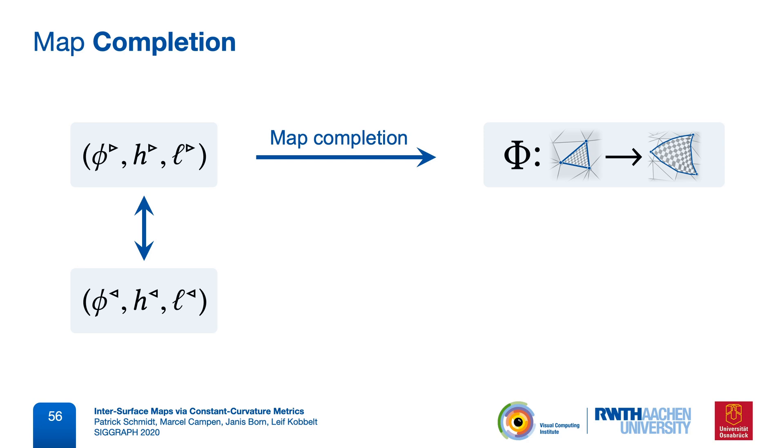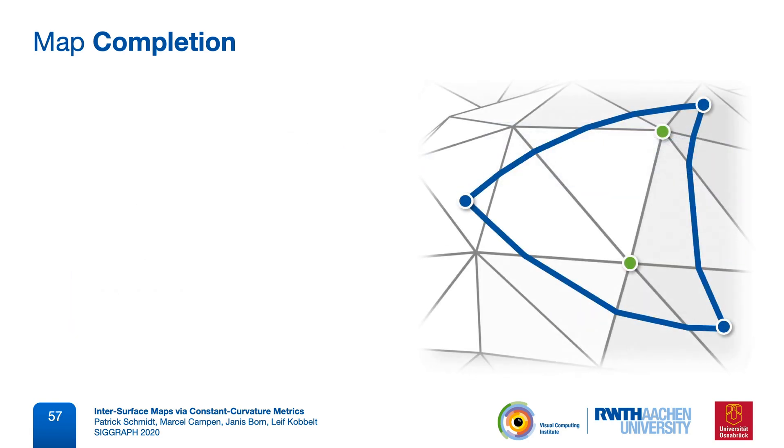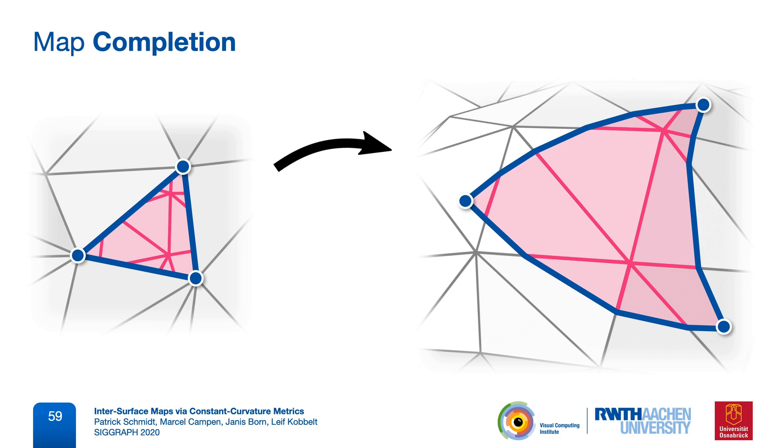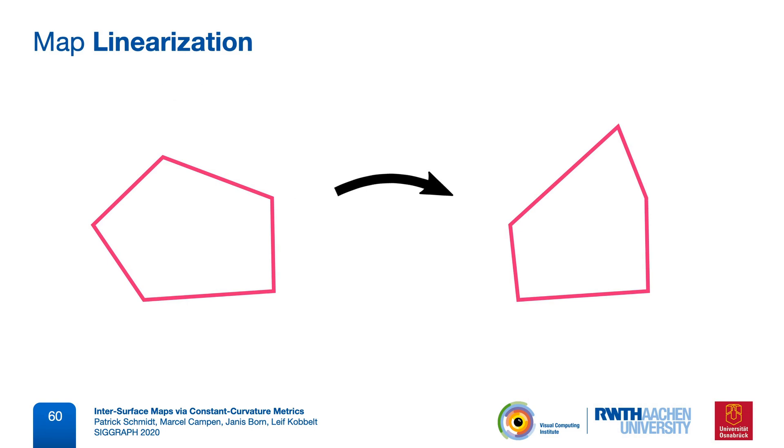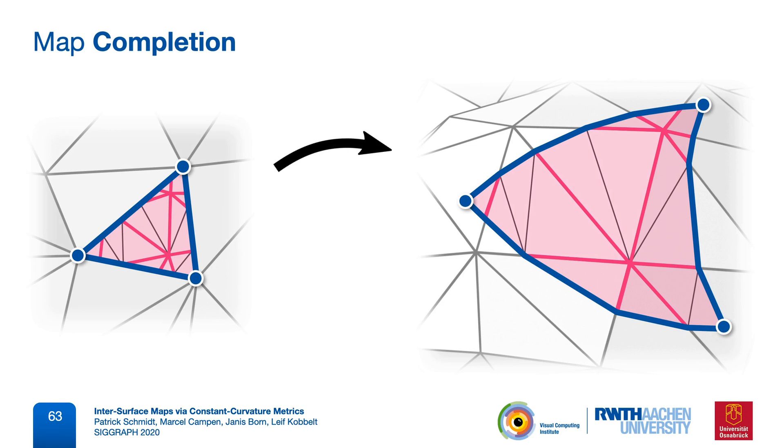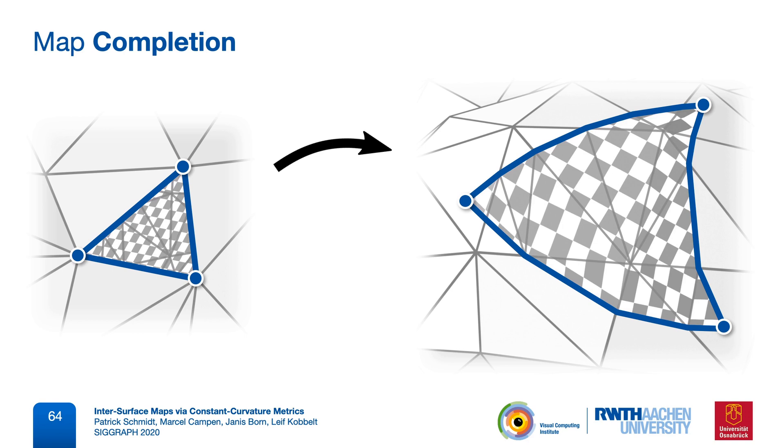Now what the completion operator does is, it computes an overlay tessellation, based on the vertices of both meshes, as well as these intersection points. This tessellation exists on both the source and the target mesh, where it has the same connectivity. It contains 3, 4, 5 or 6 gons, which are always planar and convex. If we look at the two instances of one such polygon, we already know the map along the boundary. We now have to bijectively extend the map into the interior. And for simple evaluation and optimization, we opt for a piecewise linear extension here, by simply triangulating the polygon. Applying the map completion operator on the entire mesh now gives us our piecewise linear map via a common tessellation of both models.